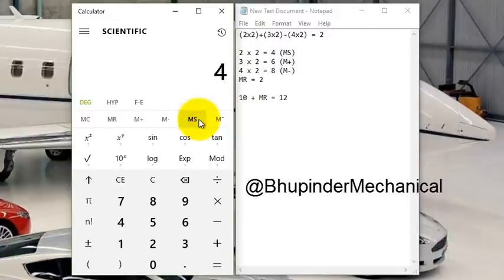After we store in the memory, then we go ahead with 3 times 2, which equals 6. Now what we've got to do is use memory add. Click on add memory. In the background, it already added 6 to the 4, so it should be 10.